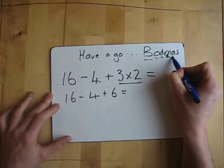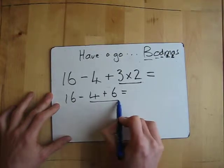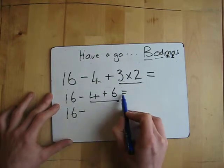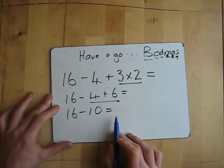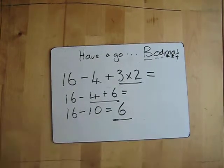Then, after that, I've got add. Is there any add? Yes, there is an add. So I must do this part next. So I'm going to do 16 take away 4 plus 6, which is 10. And finally, always do the subtraction last. So 16 take away 10 gives me 6.